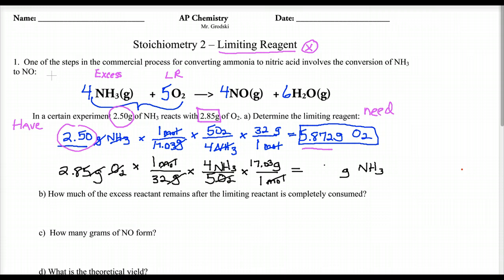2.85 divide by 32 times four divide by five times 17.03. And I get 1.2133 grams. Now what does this mean? This is how much ammonia is needed to make all of my oxygen disappear. Well, how much ammonia do I have? I have 2.50 grams. I need 1.2. So you can clearly see we have more than enough ammonia to make all of O₂ disappear. So O₂ gets to disappear.